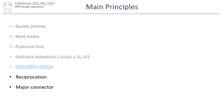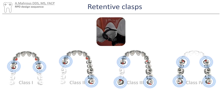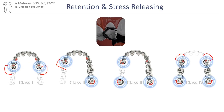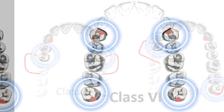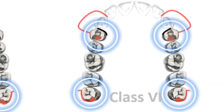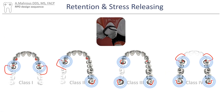Let's move on to the next step: retentive clasps. Retentive clasps are placed on teeth adjacent to the edentulous spaces. Additionally, each arch should have two to four clasps for adequate retention. Due to the need for stress breaking, the position of the rest seats on class one, class two, and class four cases will need to be changed for the use of an I-bar clasp. For more information on stress breaking, please refer to the video linked here.